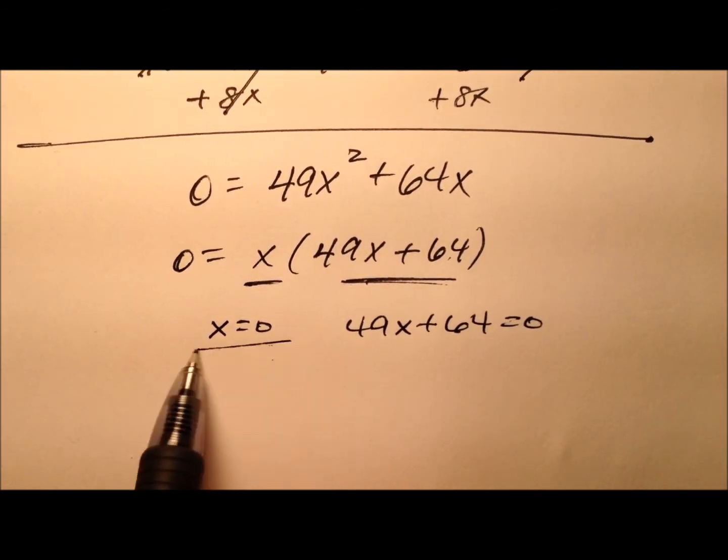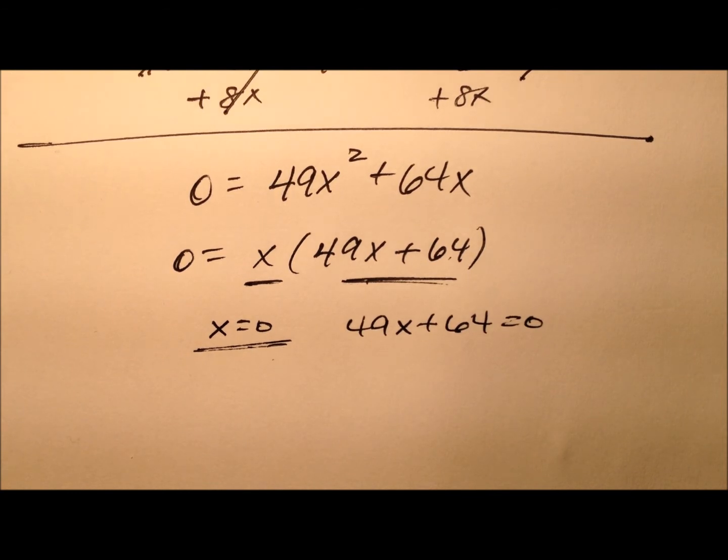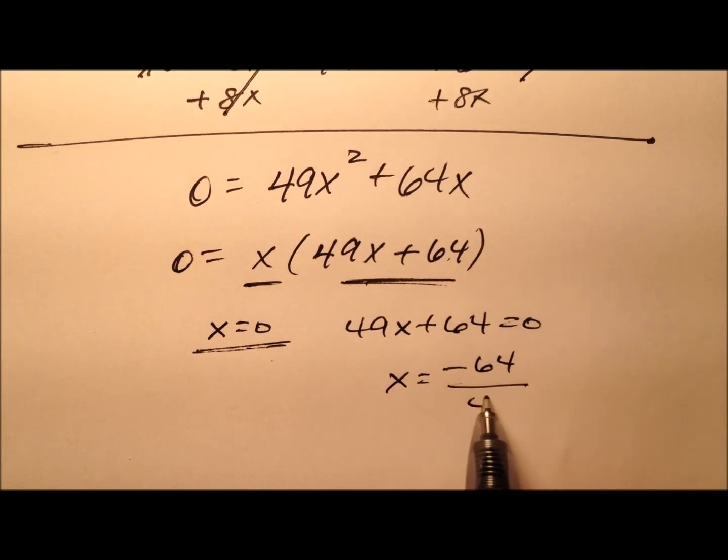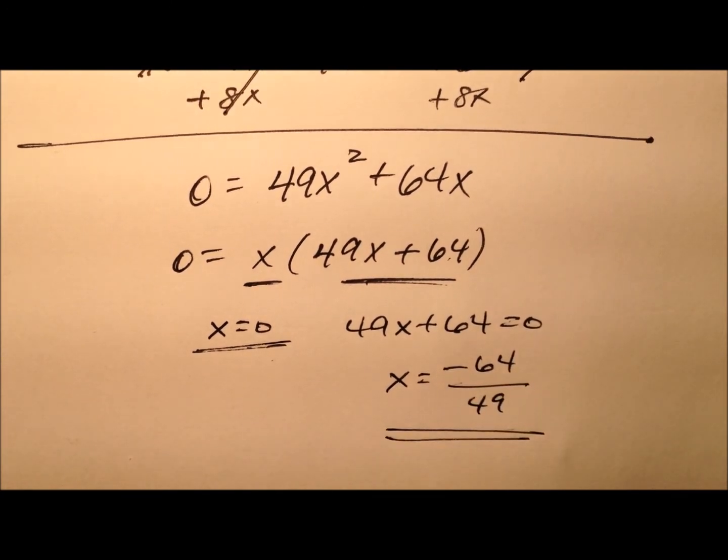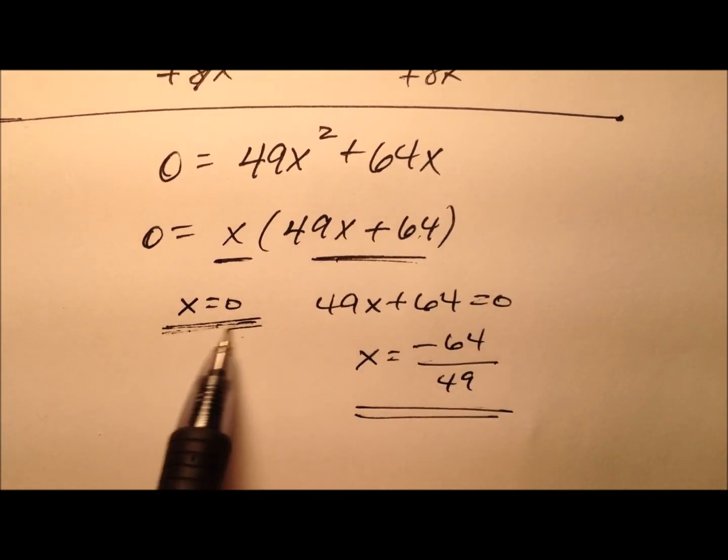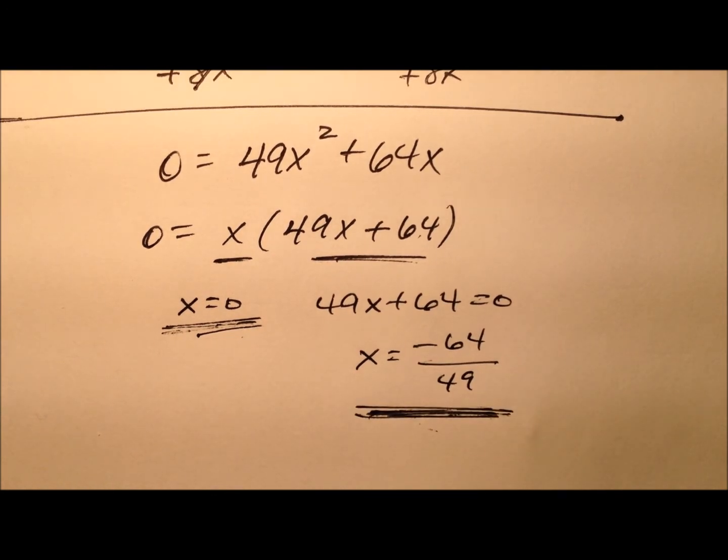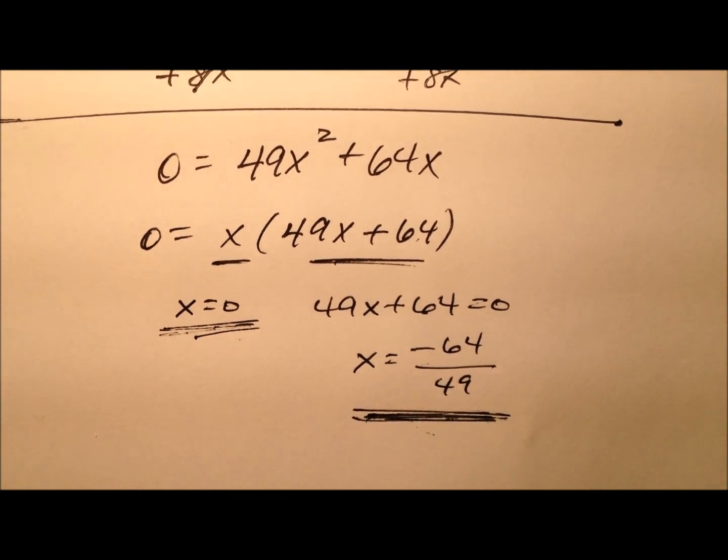This first one is really nice because x equals 0. The second one, not quite as nice. We'll have x equals negative 64 over 49. So one value is really nice, and one value is kind of an awful looking fraction, but that's okay.